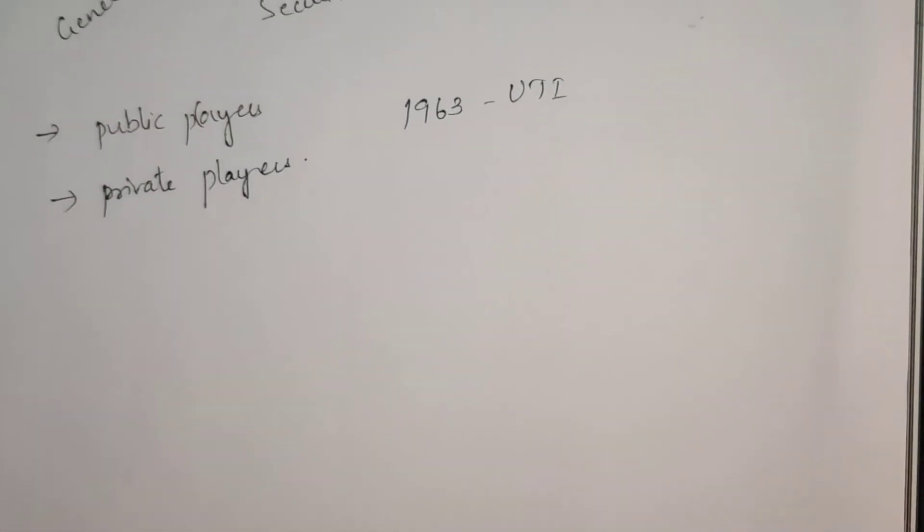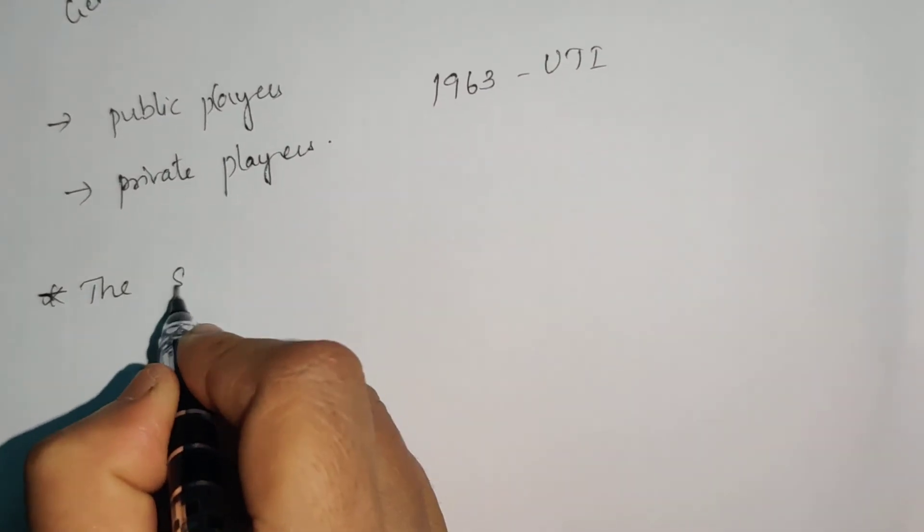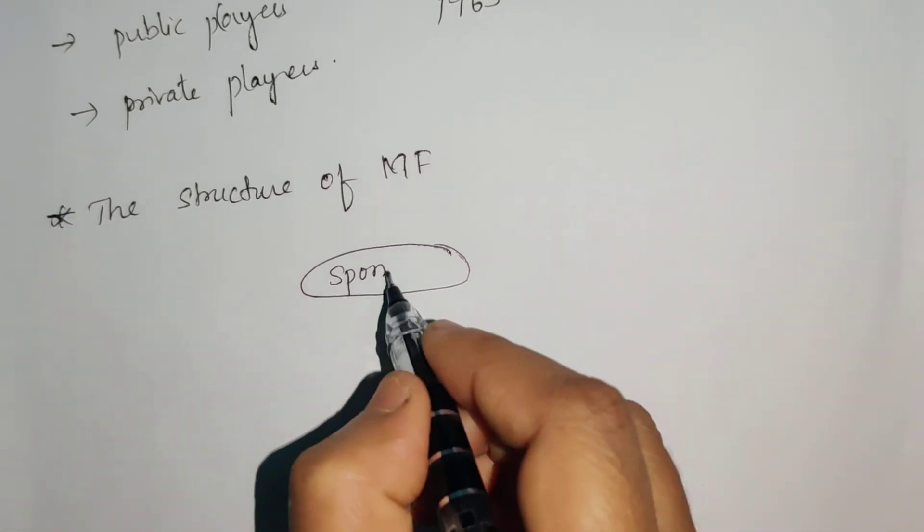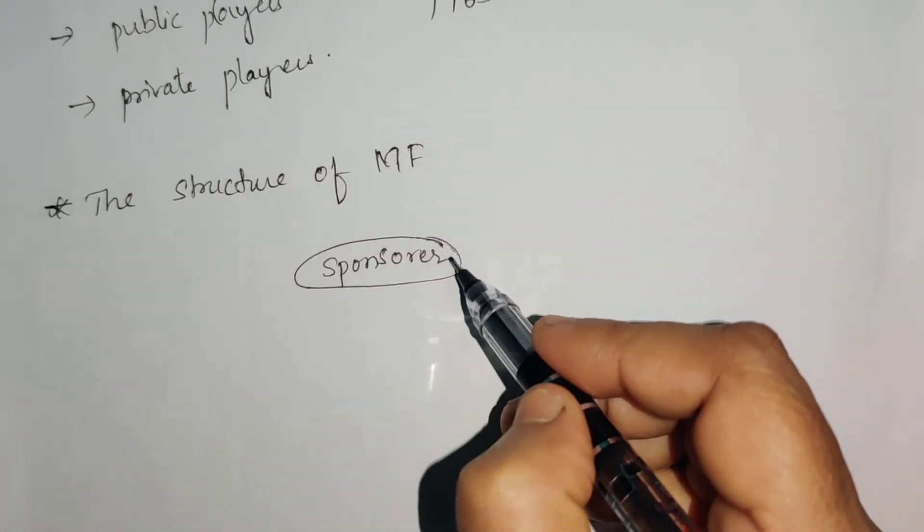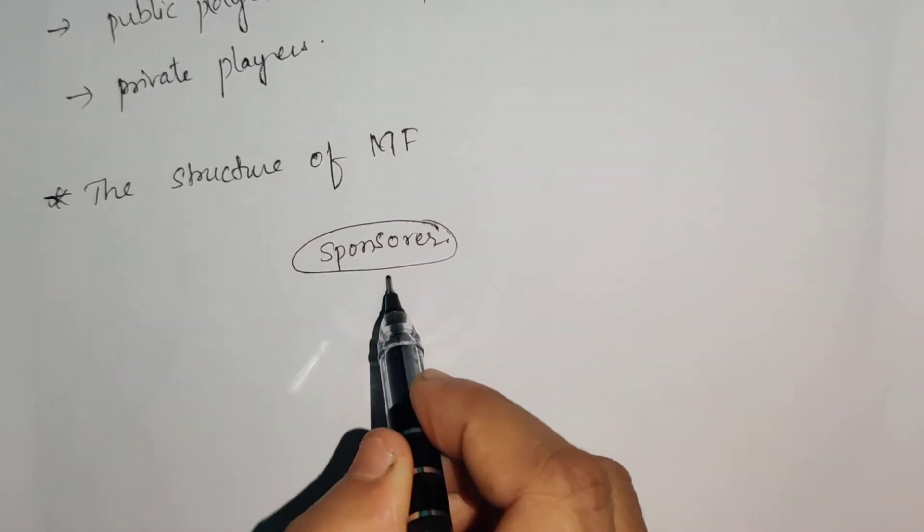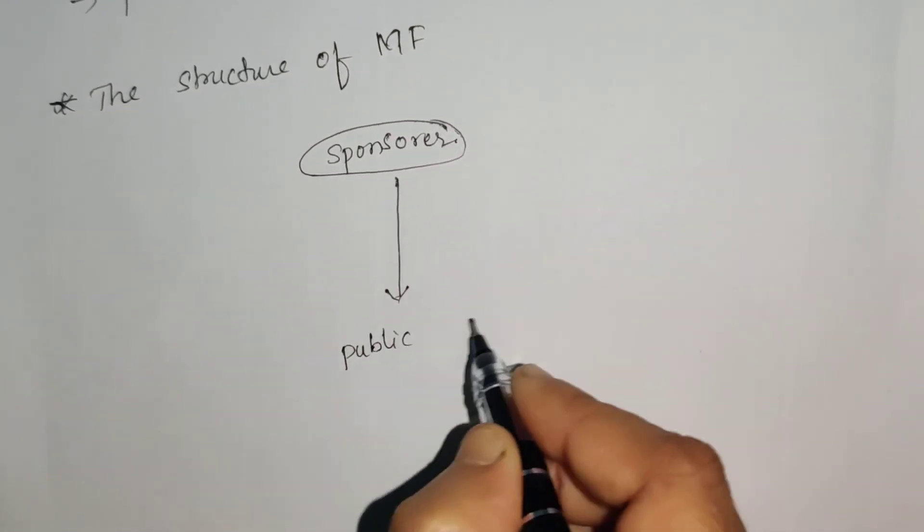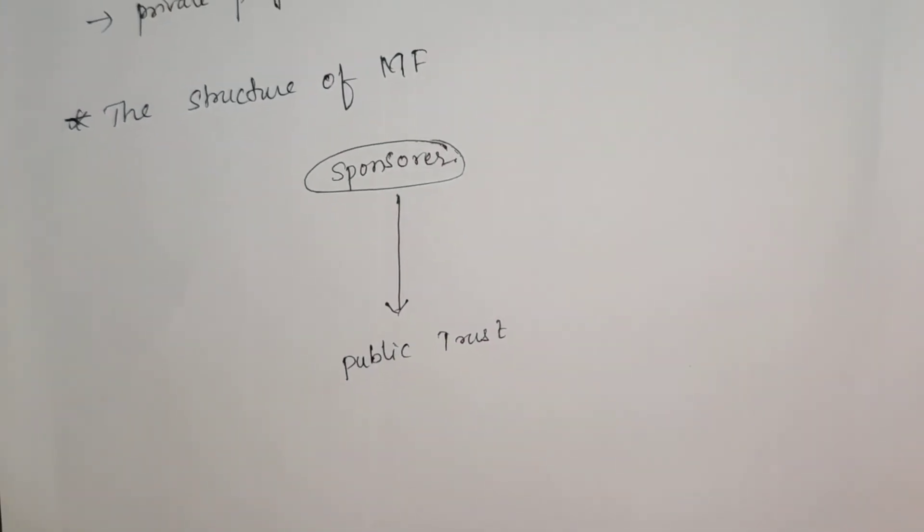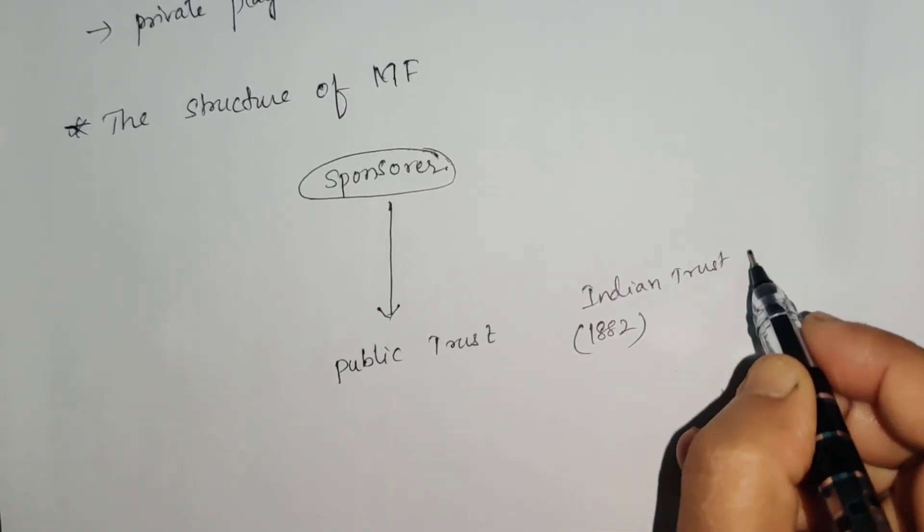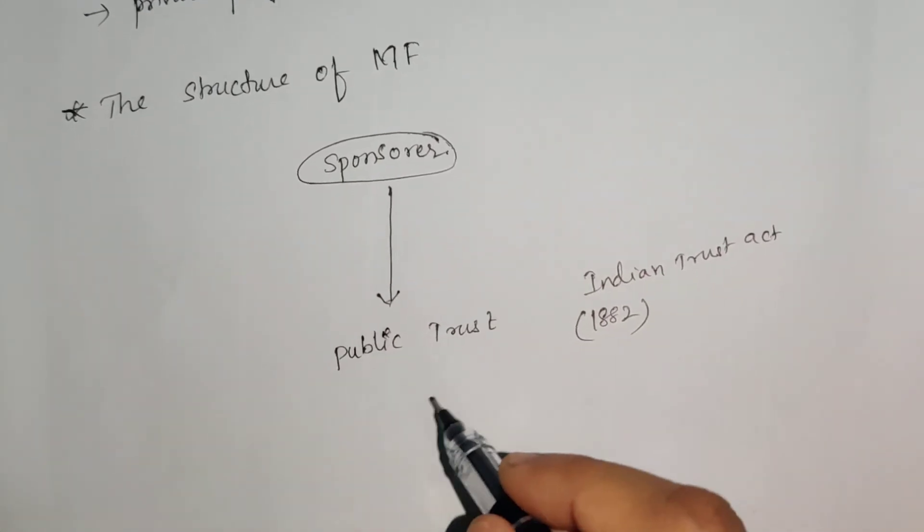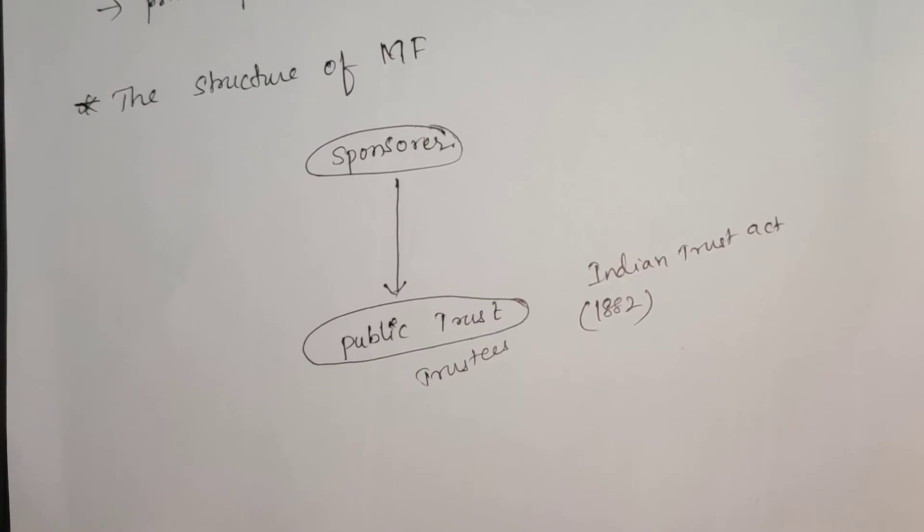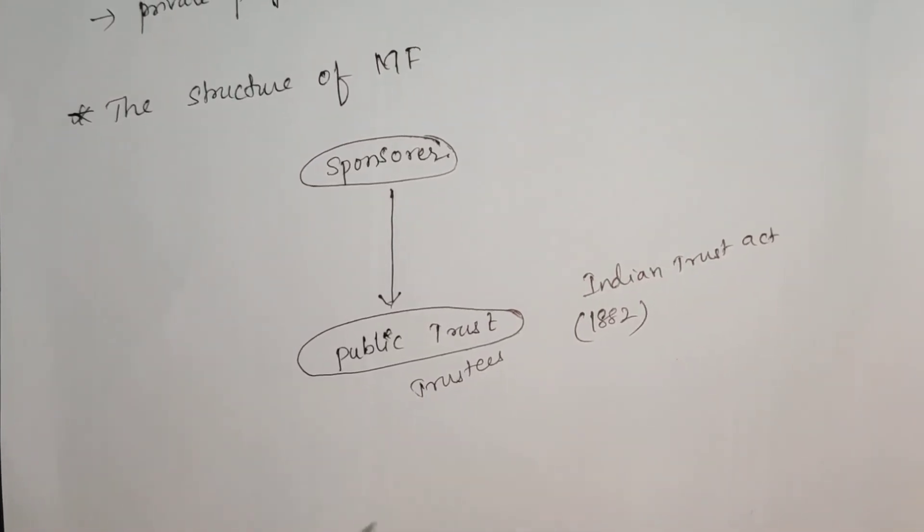When it comes to mutual funds, the structure is crucial. First, the sponsor approaches SEBI and gets approval. After seeking approval, the sponsor sets up a public trust as per the Indian Trust Act 1882. The trust nominates trustees who perform tasks on behalf of the trust. After getting approval and registration with SEBI,